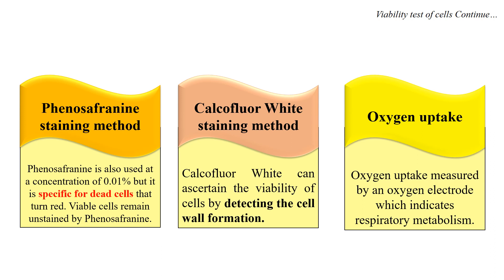These are some of the methods by which we can check the viability of plant cells or any viable cells, and differentiate between viable cells and dead cells. This is all about how we can check the viability of cells. That's all for today guys, see you in the next video. Thank you very much.